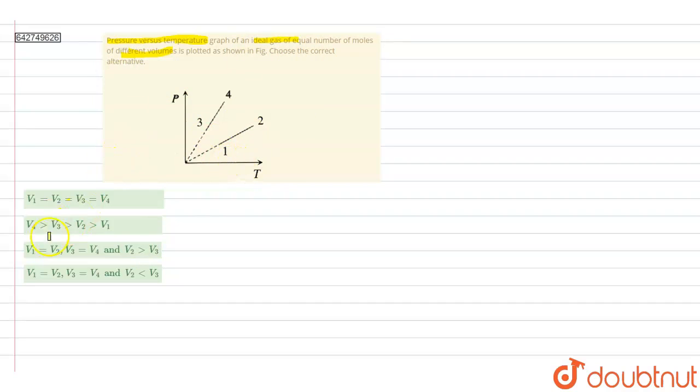So, for that, we will observe this graph and try to derive relations between the volume of the plotted points - point 1, point 2, 3 and 4.